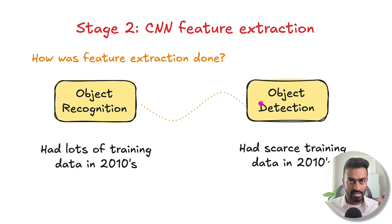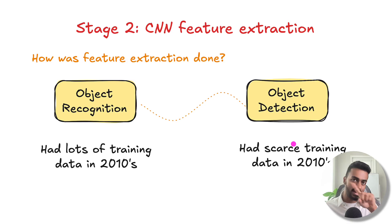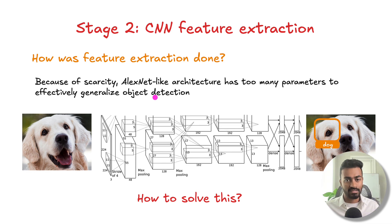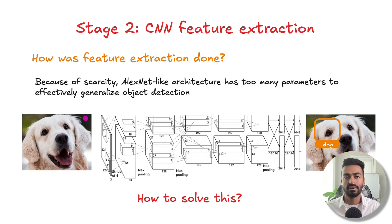One of the biggest hurdles is that by the 2010s, object recognition had a lot of training data, especially due to large datasets like ImageNet. Object detection, on the other hand, had much more scarce training data — images with bounding boxes and labeled objects. Because of this scarcity, training an AlexNet-like architecture from scratch on object detection might result in a network with way too many parameters for the scarce data available, likely performing very poorly at inference time.